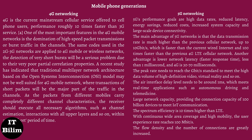4G is the current mainstream cellular service offered to cell phone users, performing roughly 10 times faster than 3G service. One of the most important features in the 4G mobile networks is the domination of high-speed packet transmissions or burst traffic in the channels. The same codes used in the 2G-3G networks are applied to 4G mobile or wireless networks; the detection of very short bursts will be a serious problem due to their very poor partial correlation properties. A recent study has indicated that traditional multilayer network architecture based on the Open Systems Interconnection model may not be well suited for a 4G mobile network, where transactions of short packets will be the major part of the traffic. As packets from different mobiles carry completely different channel characteristics, the receiver should execute all necessary algorithms, such as channel estimation and interactions with all upper layers, within a very short period of time.